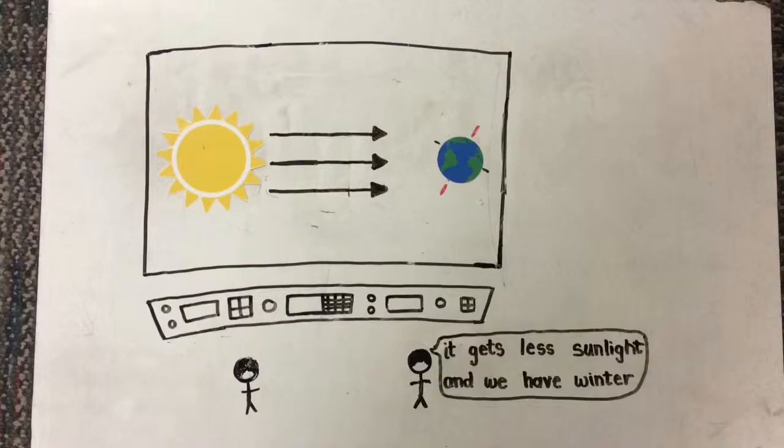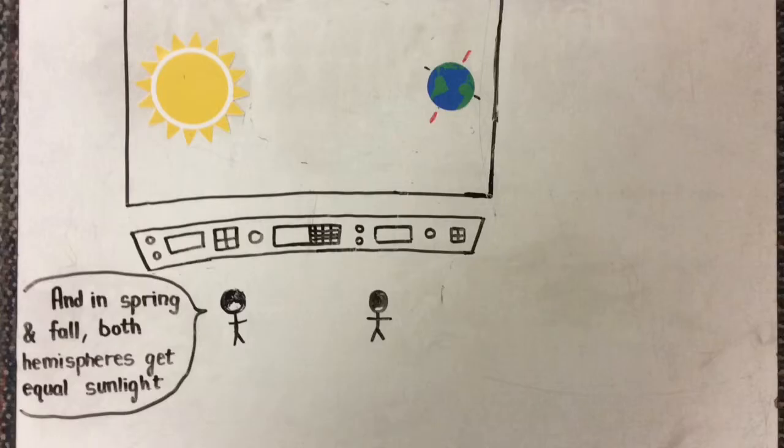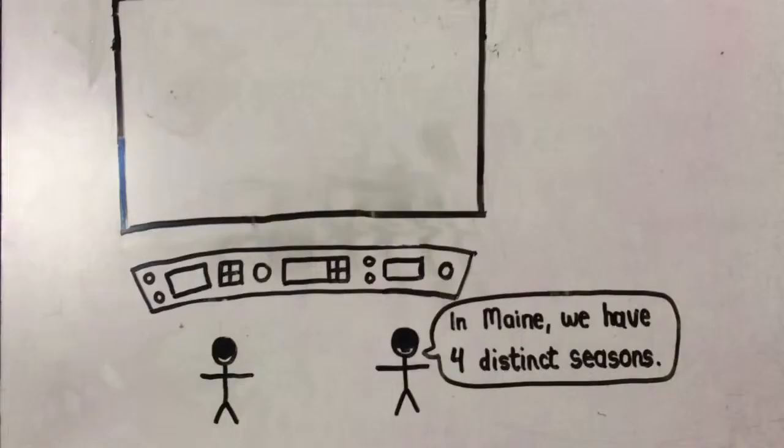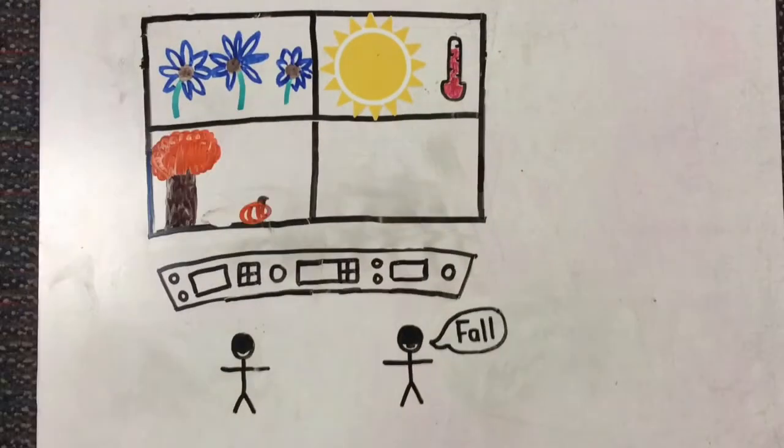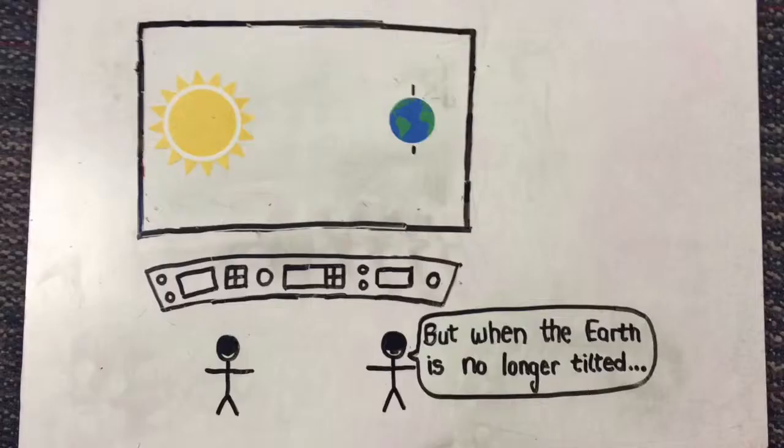And when the Northern Hemisphere is tilted away from the Sun, it gets less direct sunlight and we have winter. In spring and fall, both hemispheres get almost equal sunlight. In Maine we have four distinct seasons: spring, summer, fall or autumn, and winter.